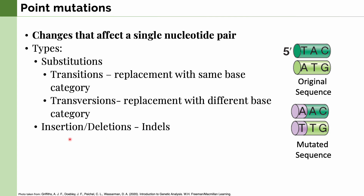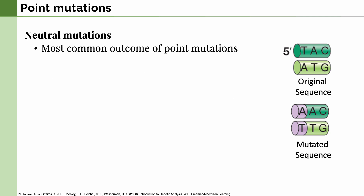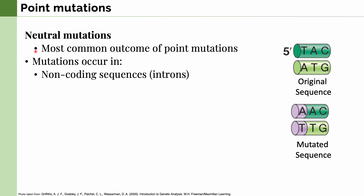Then we have insertions and deletions — a base pair can either be inserted into the original sequence or deleted. Together, we call these indels. As we discussed previously, the result of these point mutations may alter gene expression or even gene function. However, the most common outcome of point mutations are known as neutral mutations. These occur in either a non-coding sequence, the introns in eukaryotes, or the third position in codons.